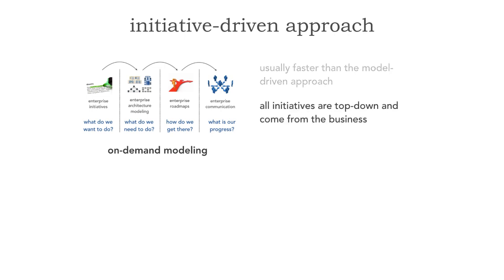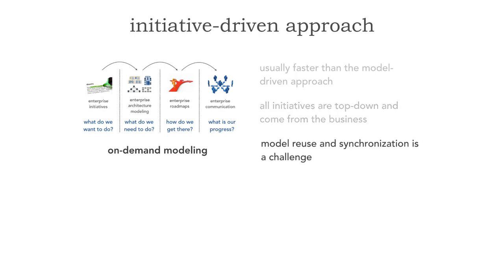One implication — and I'd say it's actually a negative — is that all initiatives are really top-down and come from the business. With the model-driven approach, because we're modeling everything all the time, we can start identifying problems and inefficiencies. But here we don't do anything until there's an initiative, so those initiatives are generally top-down. Another issue with the initiative-driven approach is that reusing and synchronizing models between teams can be a real challenge — because this is on-demand modeling, two enterprise architects may be modeling overlapping portions of the enterprise independently.